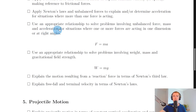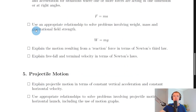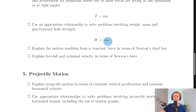You need to use an appropriate relationship to solve problems involving unbalanced force, mass and acceleration: F = ma, where F is the unbalanced force, m is mass, and a is acceleration. You also need to solve problems involving weight, mass and gravitational field strength using W = mg, where W is weight, m is mass, and g is gravitational field strength.